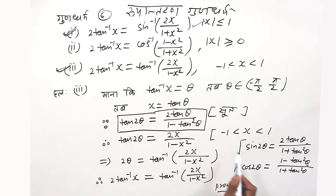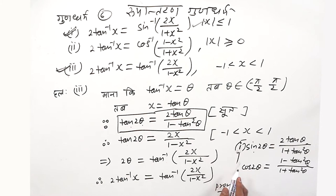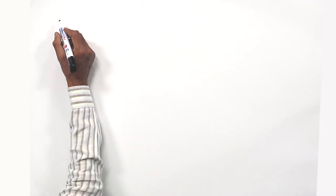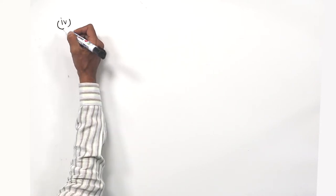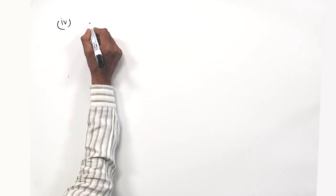The first formula is used for the first case, and the second formula is used for the second case. Keep this in mind, children. Sometimes the cot inverse form of this gundh dharma is very useful.